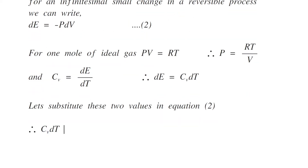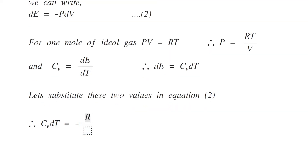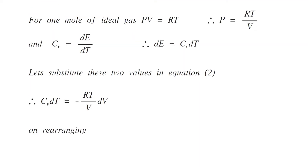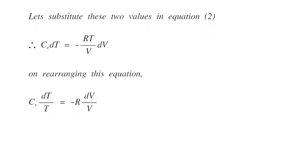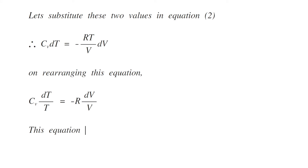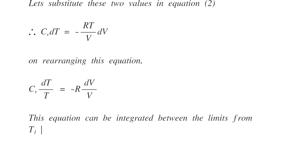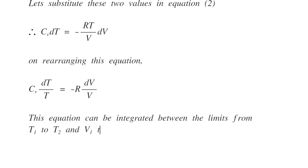Substituting these values into equation number two, CV dT becomes minus RT by V dV. On rearranging, CV dT by T is equal to minus R dV by V.